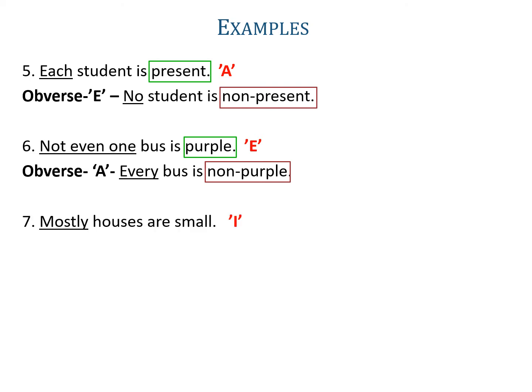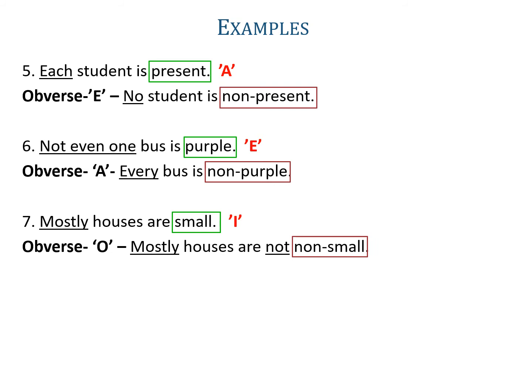Example seven: 'Mostly houses are small.' The word mostly is used, which belongs to I-proposition, so it is an I-proposition, and its obverse will be O. Here the predicate is small, so its complementary will be non-small. You can do it directly, or you can reduce this into the basic symbolic form and then write its obverse — both are correct. So the obverse will be 'mostly houses are not non-small'.